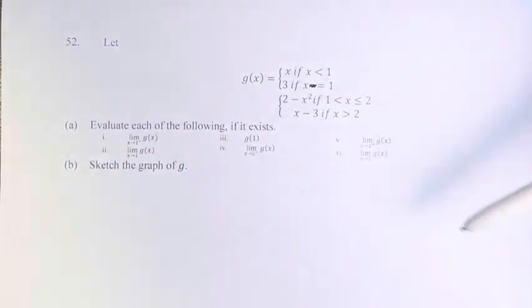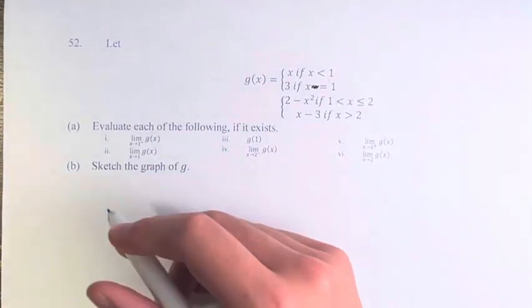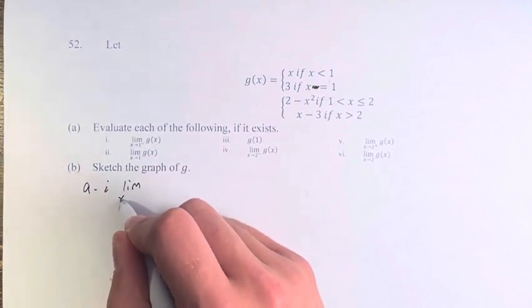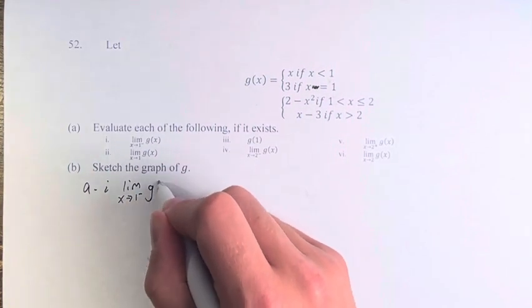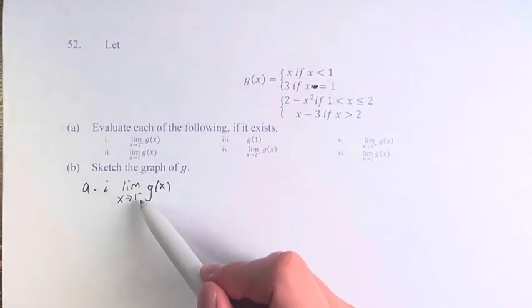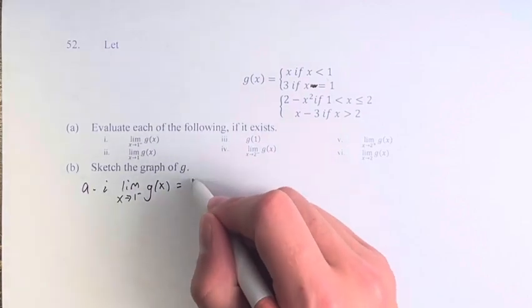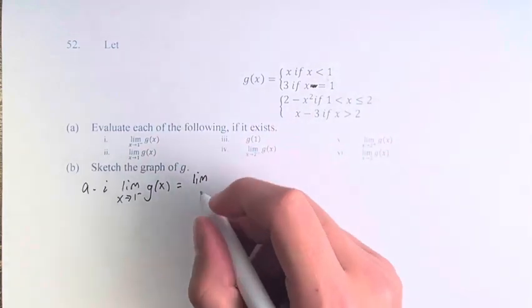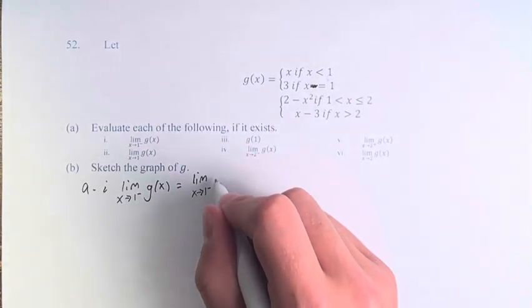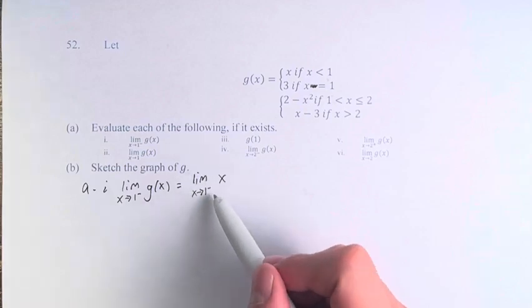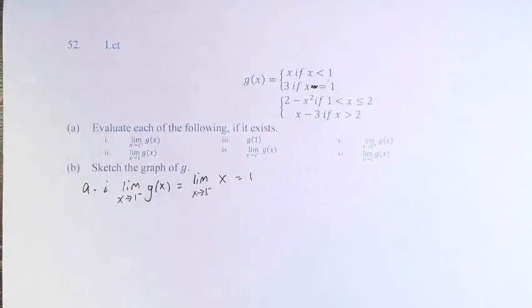We're asked to evaluate each of the following. First we have the limit as x approaches 1 from the left of the function. If we're approaching 1 from the left, these are values that are less than 1, which means we are using this part of the piecewise function. So this is the limit of x, and the limit as x approaches 1 of x is just 1.